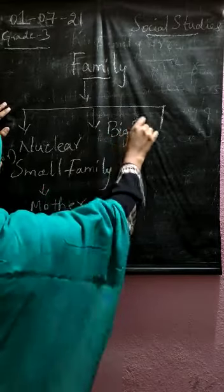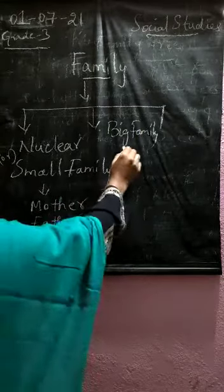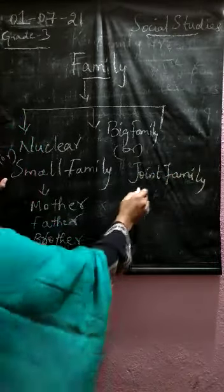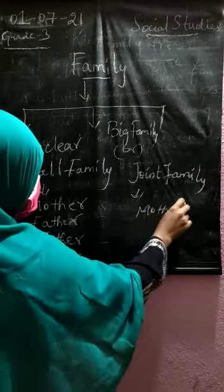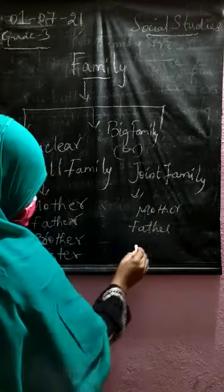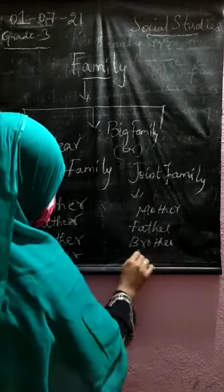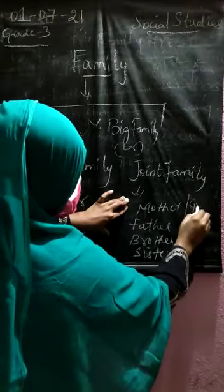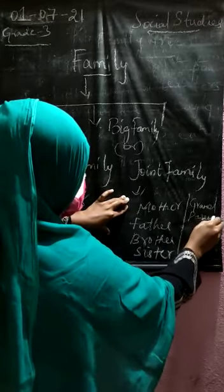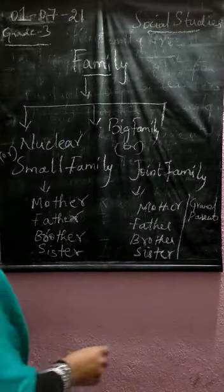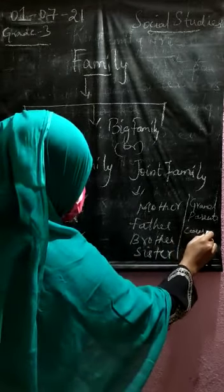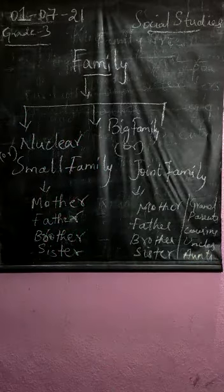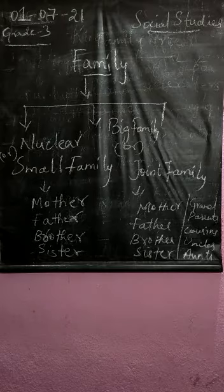The other type is called a big family, or the joint family. Here, along with your mother, father, sister, and brother, your grandparents also live — both your grandfather and grandmother — then cousins, uncles, and aunts. All together, they are called a big family.